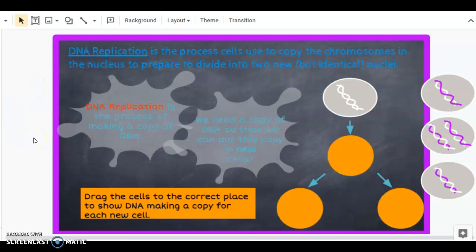On the next slide we are going to begin to look at what replication means, but before we get to cell replication you have to understand the replication of a chemical called DNA, which we've studied before quite a bit. DNA replication is the process cells used to copy the chromosomes in the nucleus to prepare to divide into two new but identical nuclei.